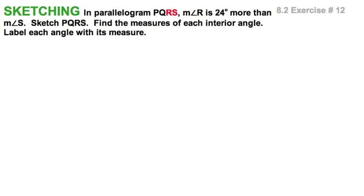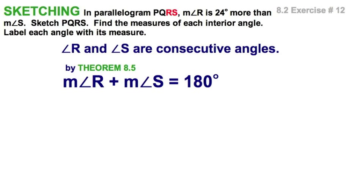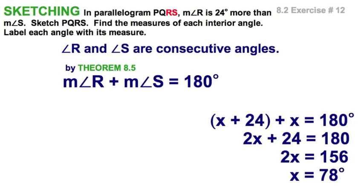Here we go with parallelogram PQRS, and I've highlighted the RS in red because they're adjacent. That means they're consecutive angles, and we know something about them. Theorem 8.5 tells us that in a parallelogram, those consecutive angles must be supplementary. And given that R is 24 more, that means I'll set up the equation this way. Set angle S equal to x, and angle R is x plus 24.